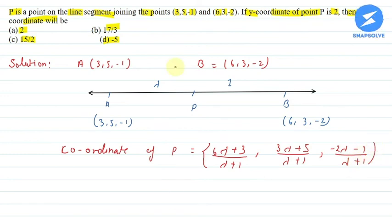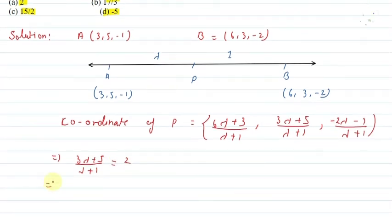The y-coordinate equals 2, so we can solve: (3λ+5)/(λ+1) = 2. Solving this: 3λ+5 = 2λ+2, which gives λ = -3.